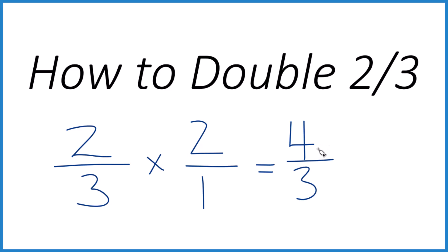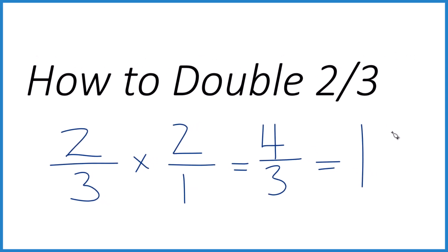This is an improper fraction because the numerator is bigger than the denominator, so let's change it to a mixed number. 3 goes into 4 one time with 1 left over, and we bring the 3 across. You can check that: 1 times 3 is 3, and 3 plus 1 is 4 — we just kept the 3 the same.